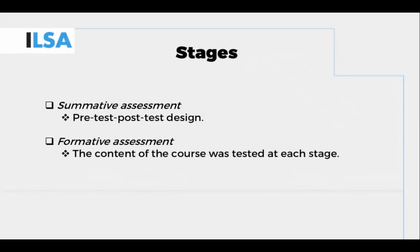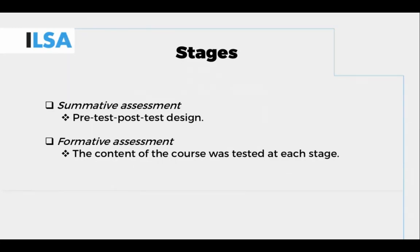The work carried out in IO 6 went through two stages: summative assessment and formative assessment. The summative assessment followed a pre-test, post-test design. For formative assessment, the course was designed progressively and testing of the content was carried out for each module as they were being designed. Before the ILSA course was developed, two pre-tests were carried out to test potential course material. Once the material had been deemed suitable for interlingual re-speaking training, it was included within the ILSA course and a post-test was carried out. The data includes performance analysis and students' feedback on the materials.